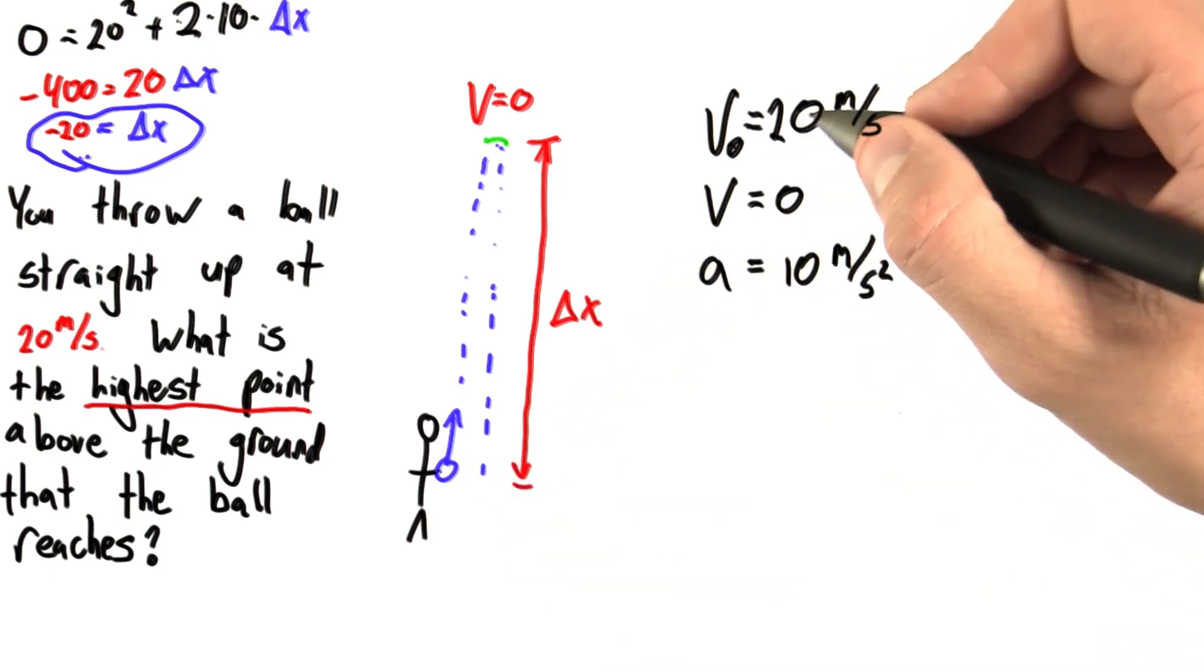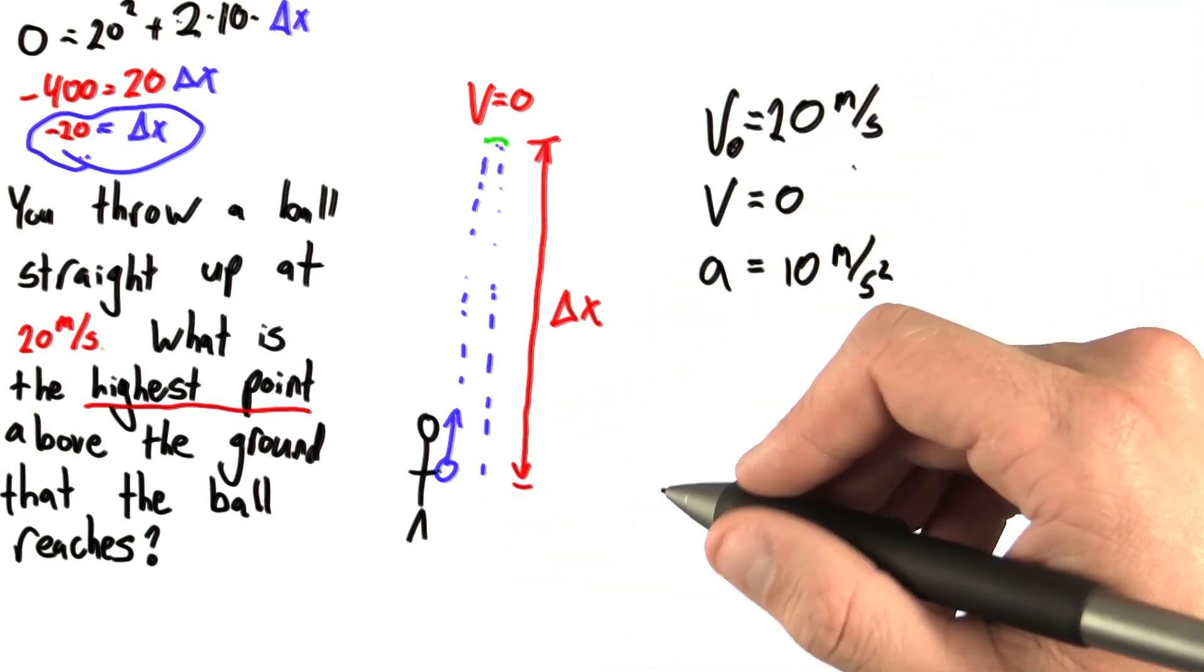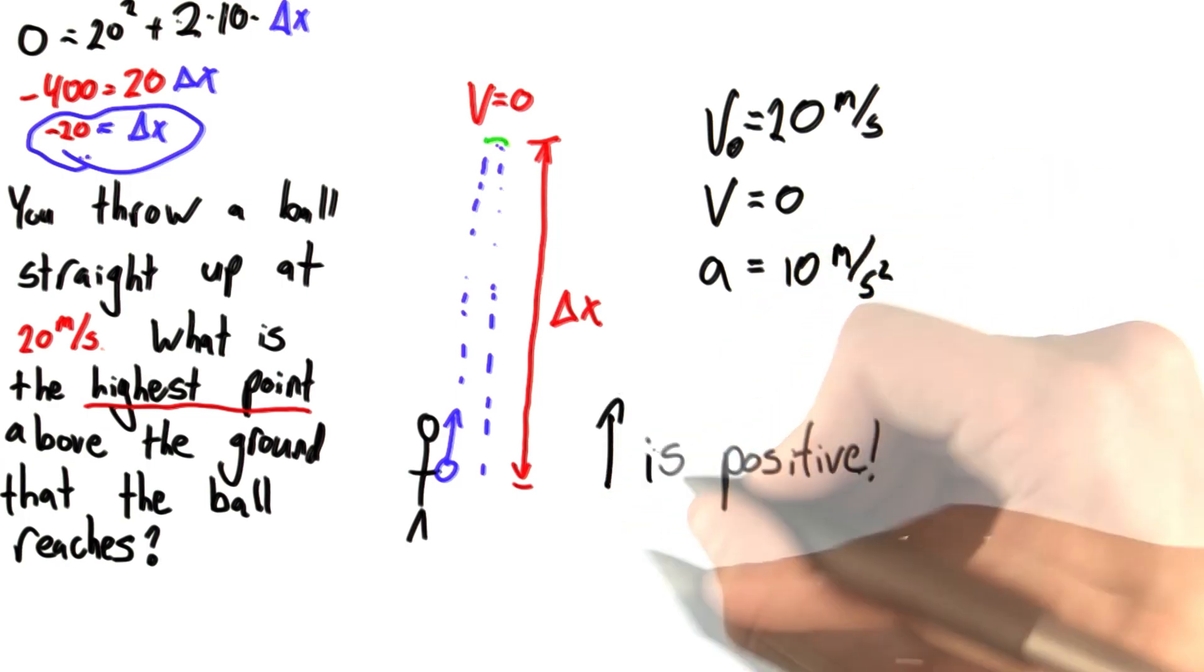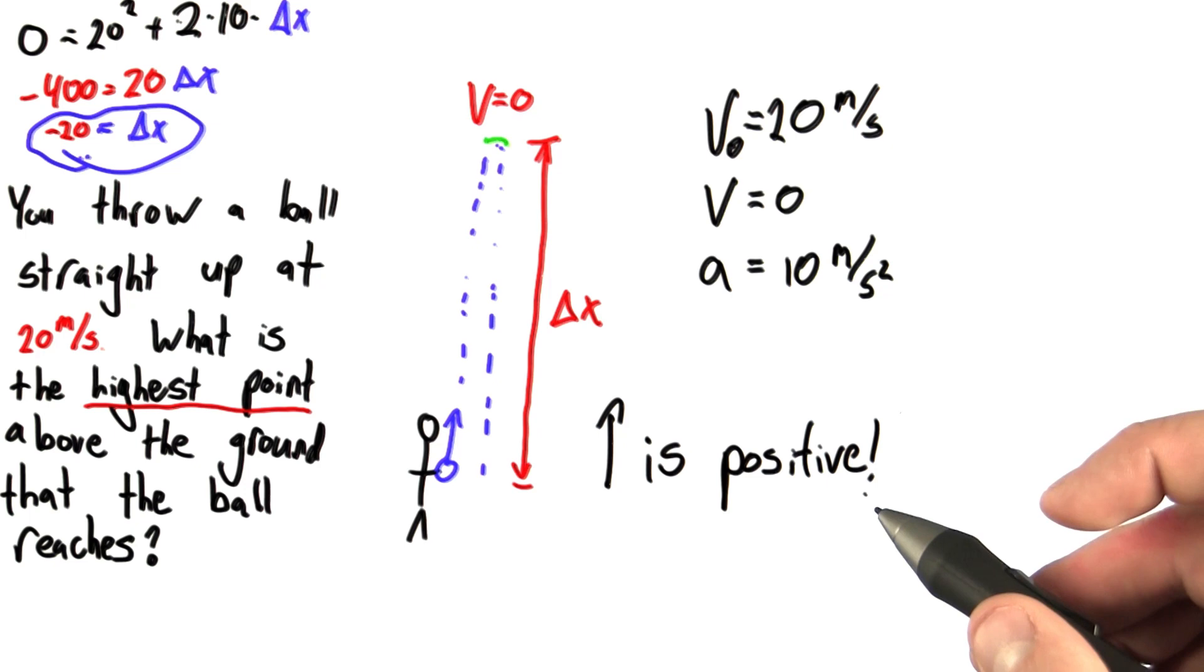When we said that the initial velocity was positive 20, we made a choice. We said in this problem, up is positive. Now, we were free to make that choice. We could have said down is positive too. But once we make our choice, we're no longer free.